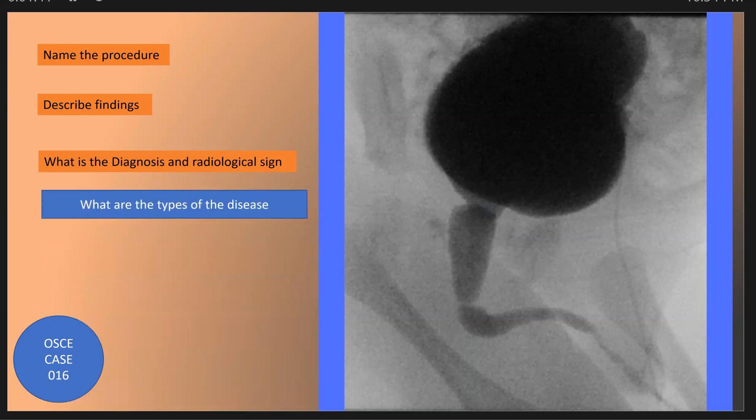What are the types of posterior urethral valve? We have three types of posterior urethral valve. Type 1 is the most common, with two mucosal folds extending anterior inferiorly from the verum montanum and fusing anteriorly at the lower level.